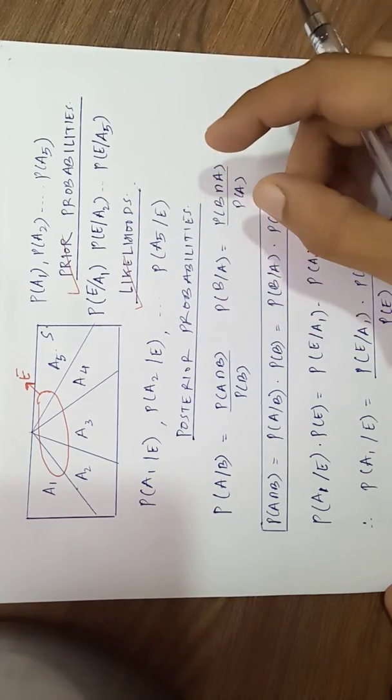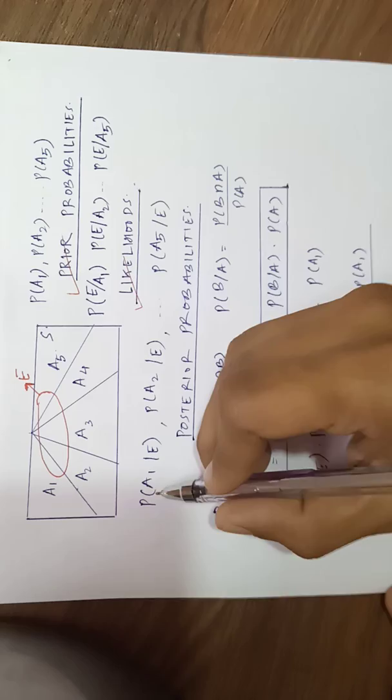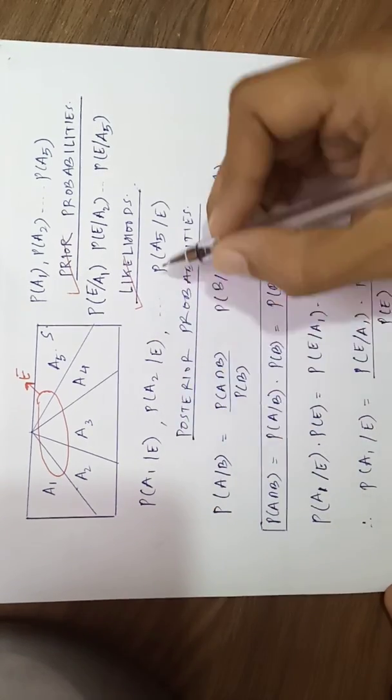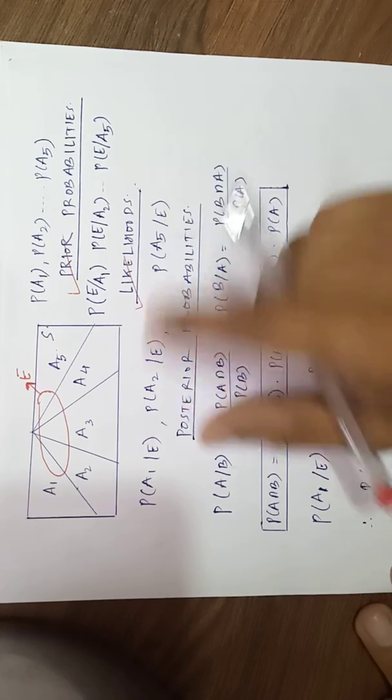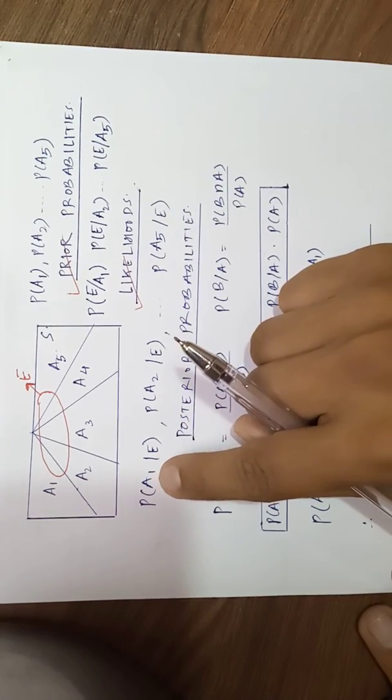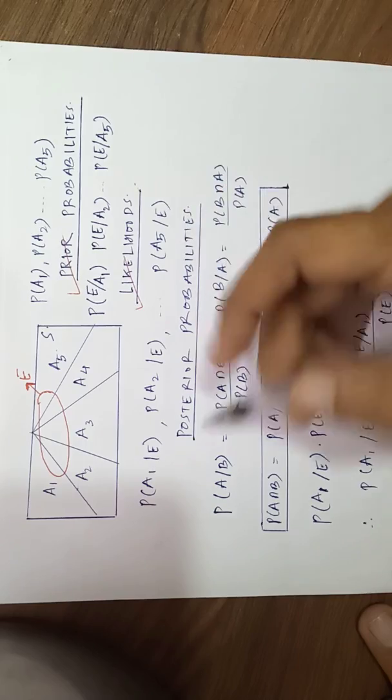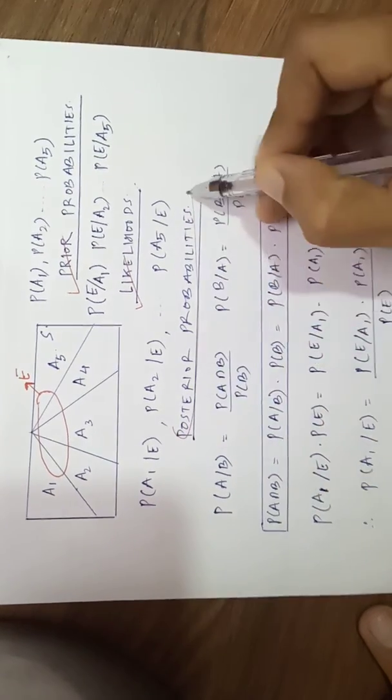Usually in Bayesian problems we have this term - probability of a1 given e, a2 given e, and a5 given e. Which were mutually exclusive exhaustive events, their occurrence, their probability we have to take out when e occurred. So this is called posterior probabilities.